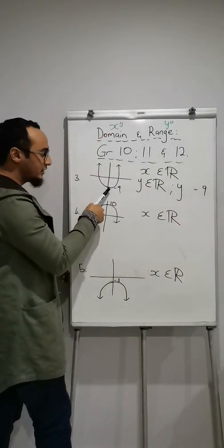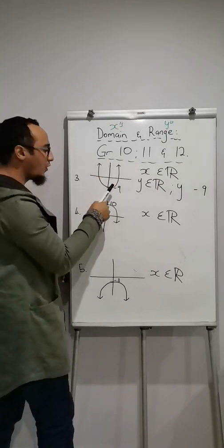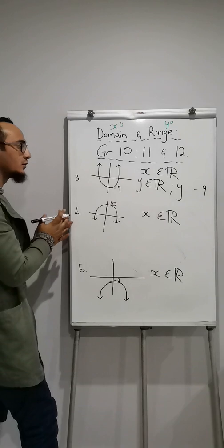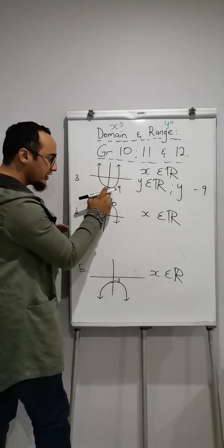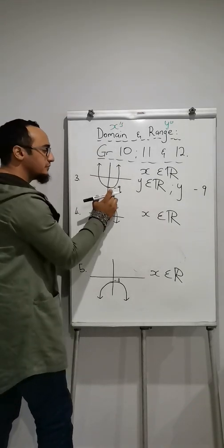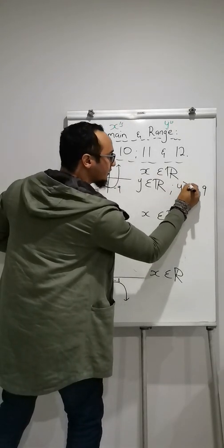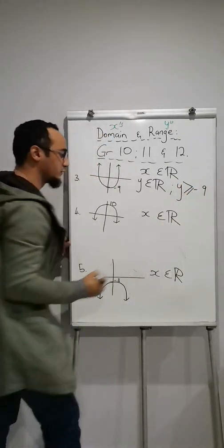Does it happen on 9 and above or on 9 and below negative 9? So it's negative 9, not 9. So my graph happens on 9 and above of them, which means y would be higher than negative 9 or equal to. The next one.